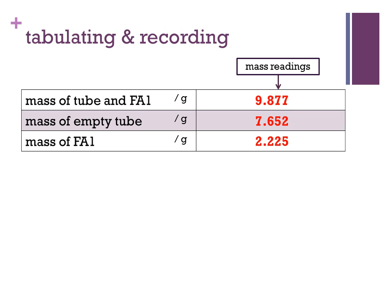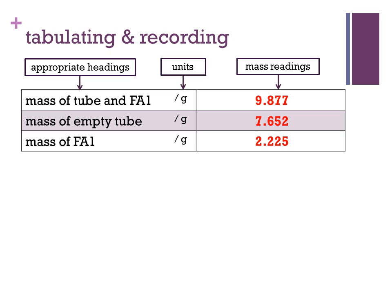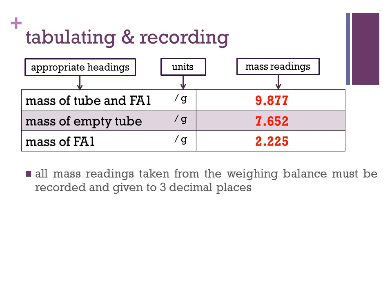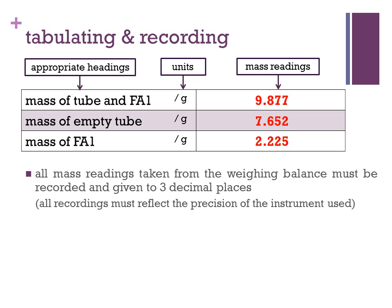Mass readings must be recorded in the table as shown, with appropriate headings and units. All mass readings taken from the weighing balance must be recorded and given to three decimal places. In general, all recordings must reflect the precision of the instrument used.